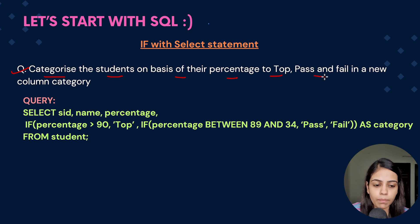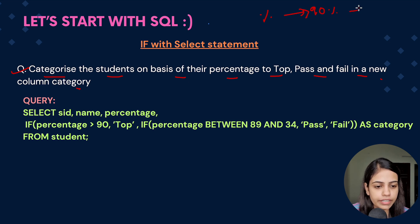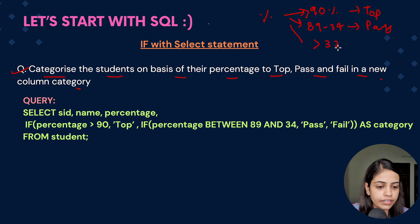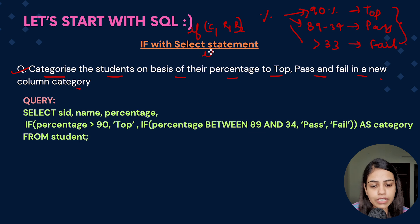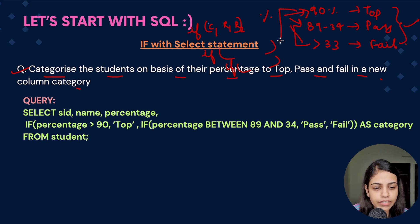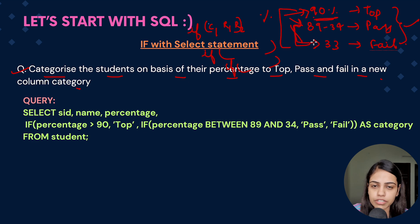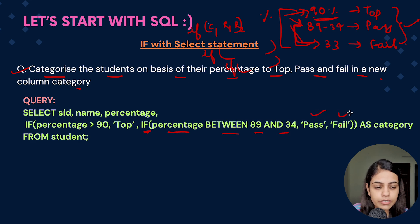The first use case for IF is the same student categorization — Top, Pass, Fail — but IF only handles one condition returning two possible results. Since we have three categories, we need nested IF. We handle the inner two cases first: IF(percentage BETWEEN 34 AND 89, 'Pass', 'Fail'). This inner IF handles Pass and Fail, and then we wrap it in an outer IF for the Top condition.